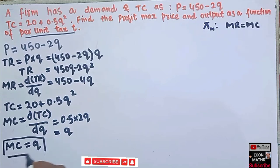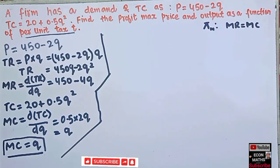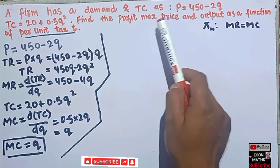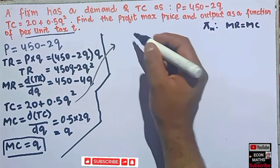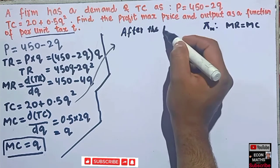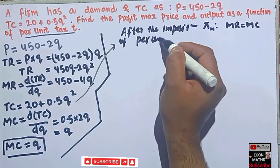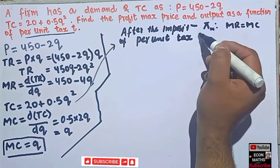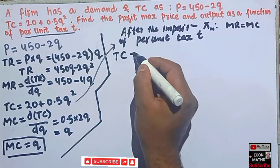This is our marginal cost before the imposition of the per unit tax. Now, what we have to find is the profit-maximizing price and output as a function of per unit tax. For that, we take our total cost function and consider what happens after the imposition of a per unit tax — let us call it t, which is given in the question.